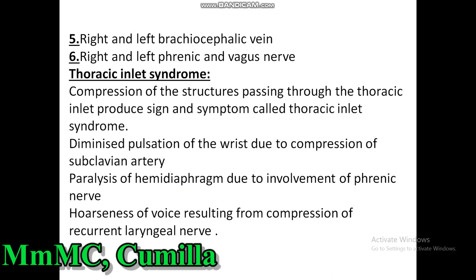A question may come from clinical anatomy: thoracic inlet syndrome. Compression of the structures passing through the thoracic inlet produces signs and symptoms called thoracic inlet syndrome. These include diminished pulsation of the wrist due to compression of the subclavian artery, paralysis of the hemi-diaphragm due to involvement of the phrenic nerve, and hoarseness of voice resulting from compression of the recurrent laryngeal nerve.